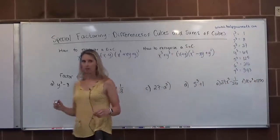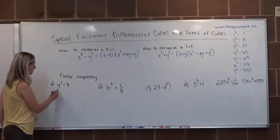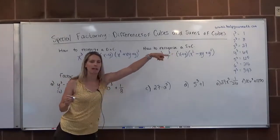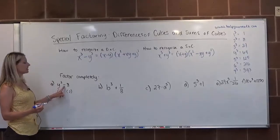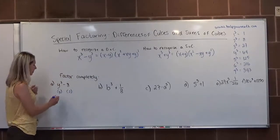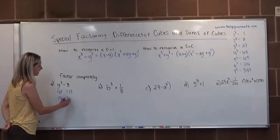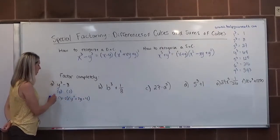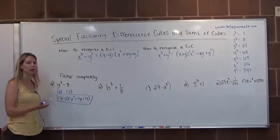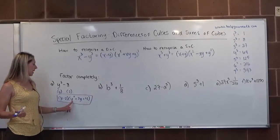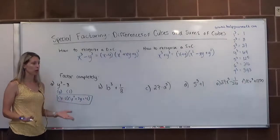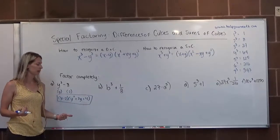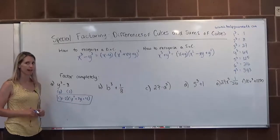For letter A, our first example, we have y cubed minus 8. Y cubed is a perfect cube and its cubed root is y. 8 is a perfect cube, its root is 2. This is a difference, so we're going to use the difference formula. It will be (y - 2) times (y² + 2y + 4). Y squared plus 2y plus 4 is not factorable. Target product would be 4, target sum is 2y. This would be the final factoring for letter A.